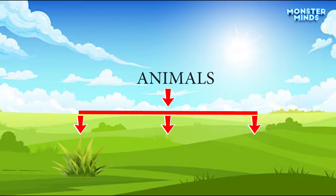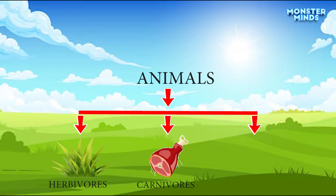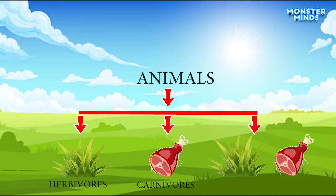Plant eaters are herbivores. Meat eaters are carnivores. Plant and meat eaters are called omnivores.